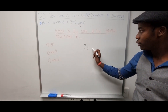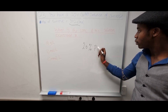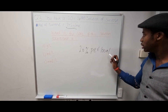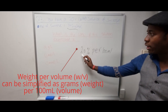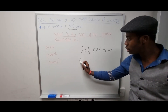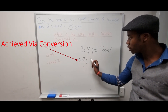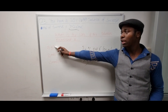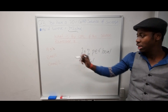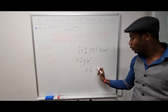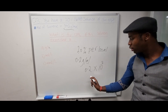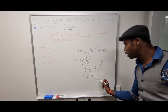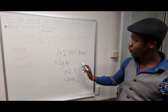We know we have 20 grams per 100 milliliters volume. What we can do is find 20% of that, which gives us 0.2 grams per milliliter. The unit they're asking us for is grams per liter. To convert milliliters to liters, we multiply 0.2 by 10 to the power of 3, which gives us 200 grams per liter.